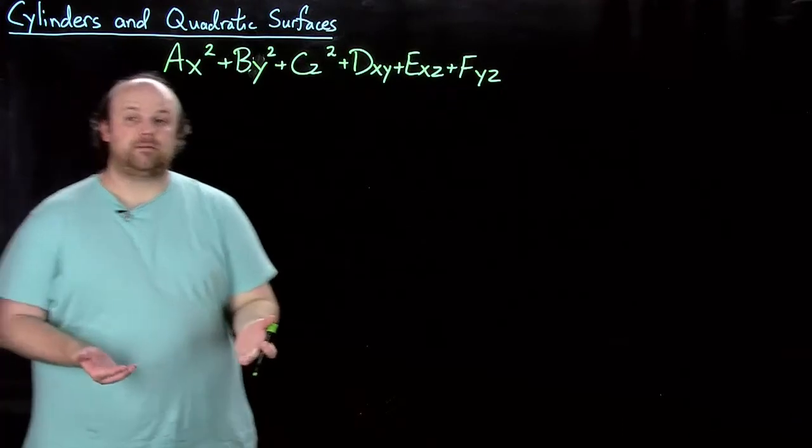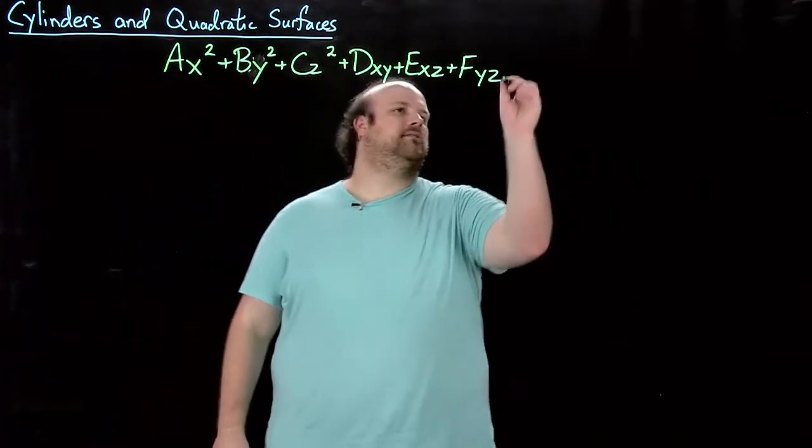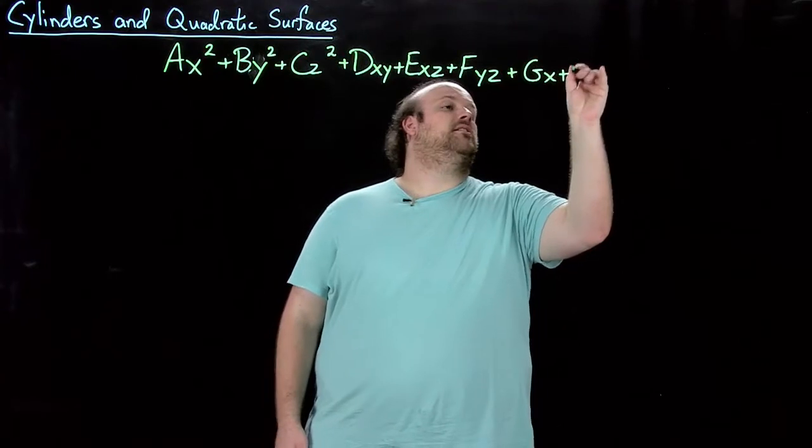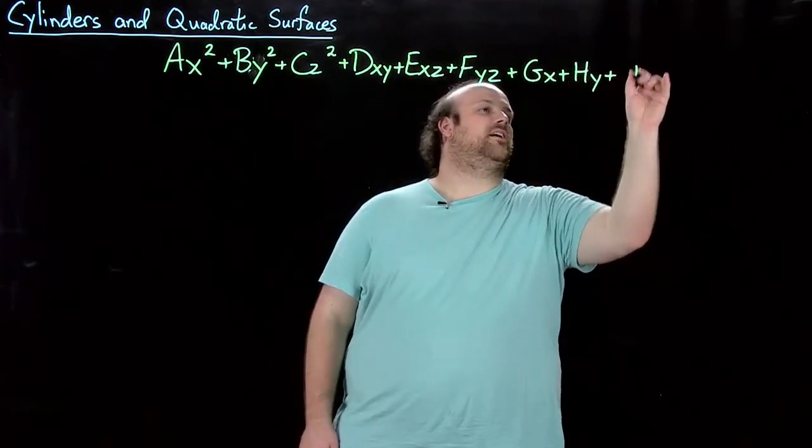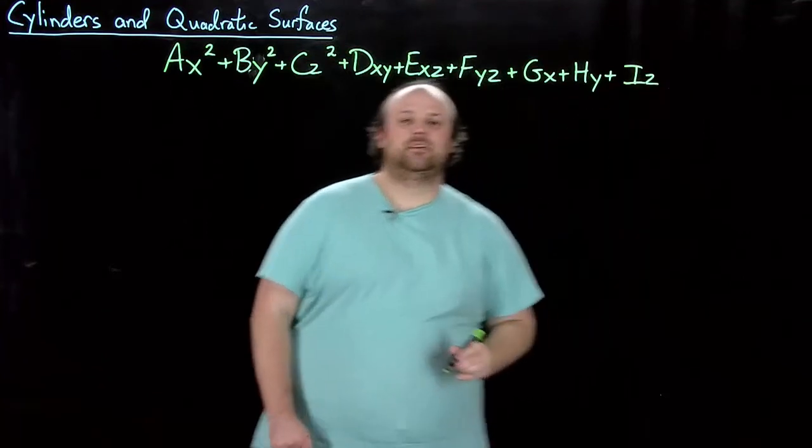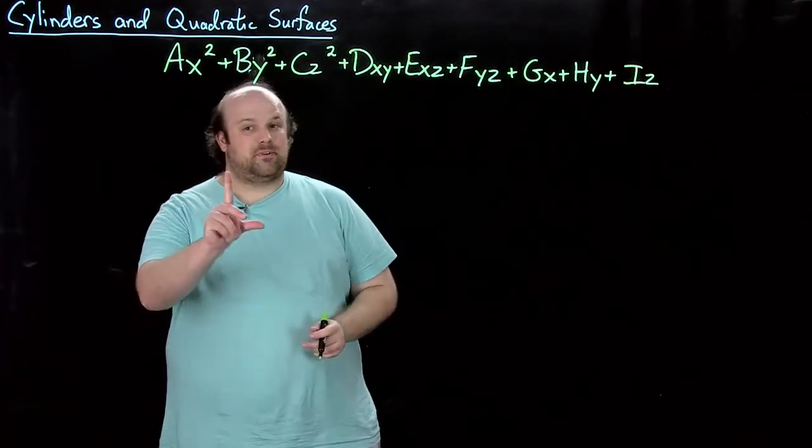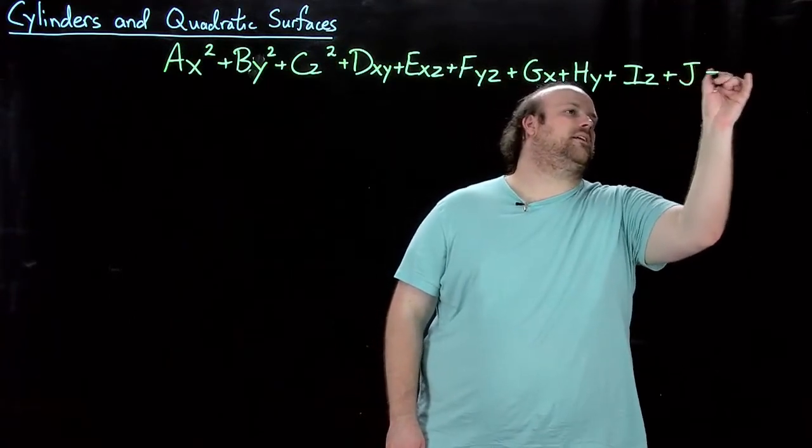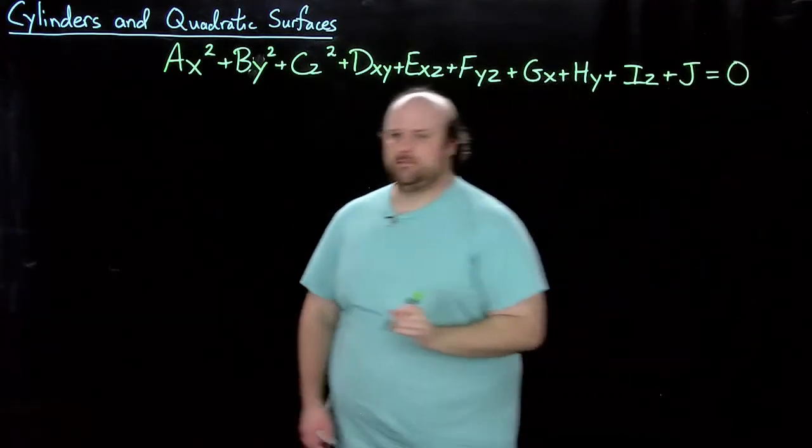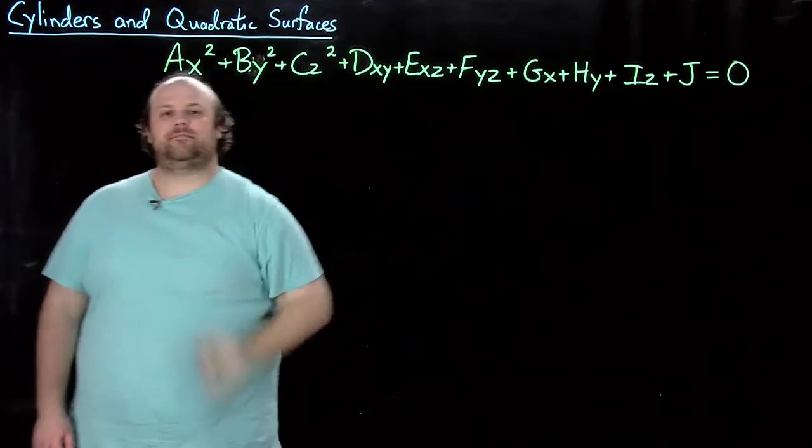Now we have the degree 1 terms. There's only three of those. gx plus hy plus iz. And now there's one more thing, the degree 0, plus j. And all of this equals 0. So we want to graph that.